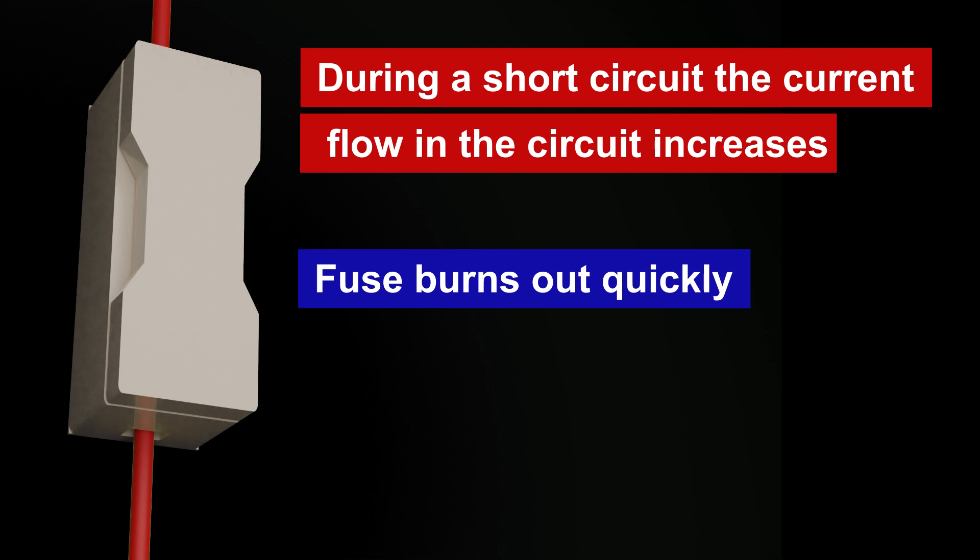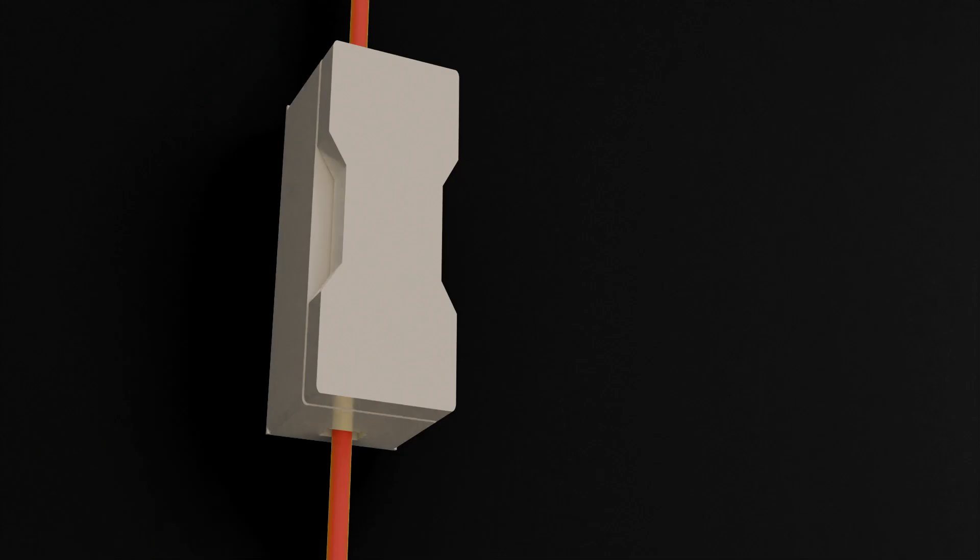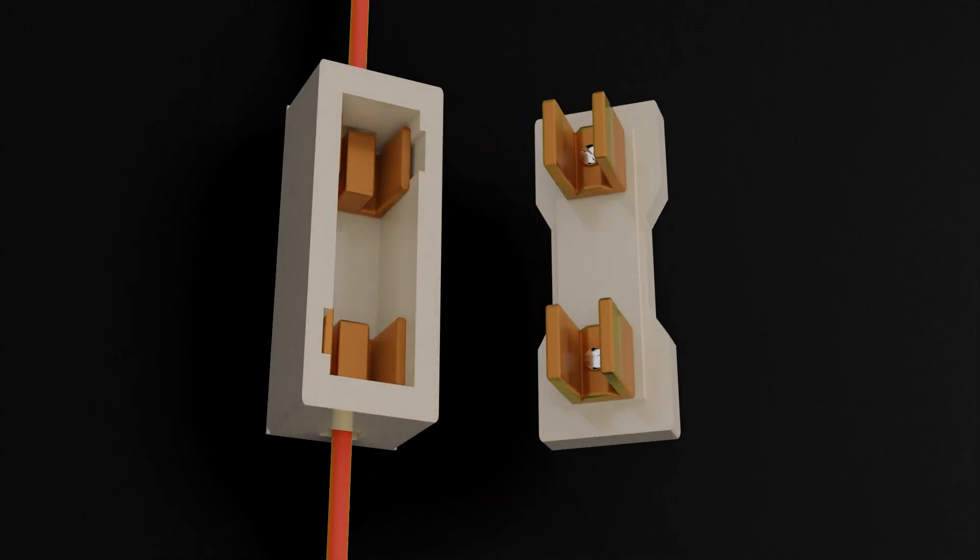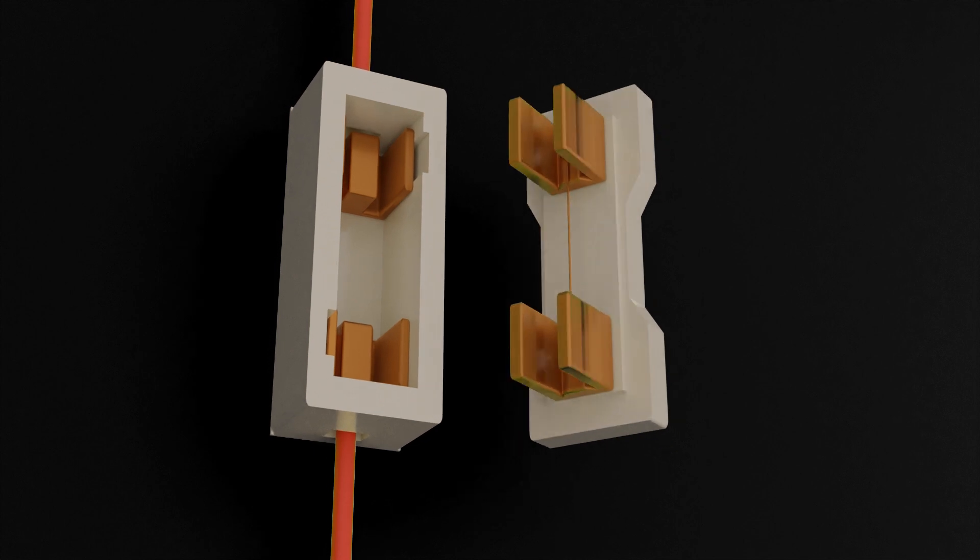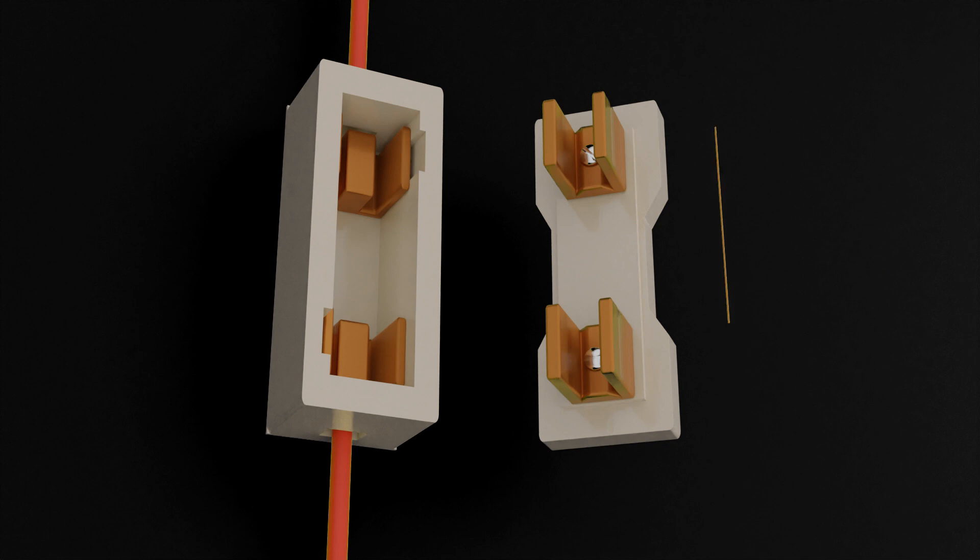As a result, the circuit is cut—that is, the flow of current in the circuit is stopped. Now to make the current flow in the circuit, the fuse wire has to be manually installed in the fuse box. That is, for every fault, the fuse has to be changed repeatedly.